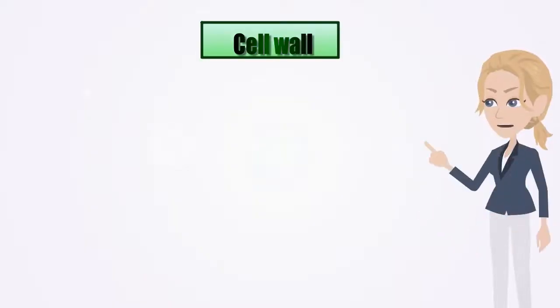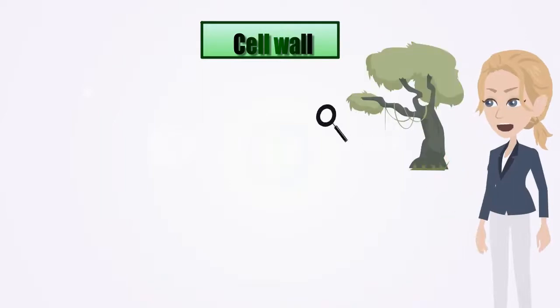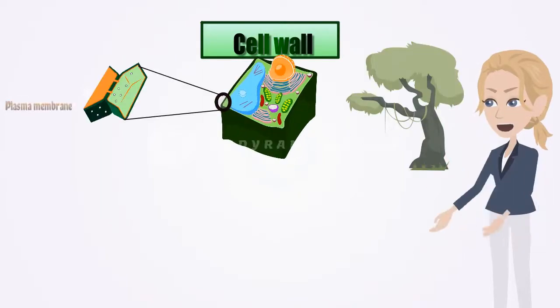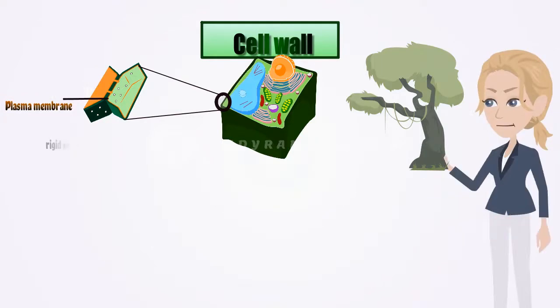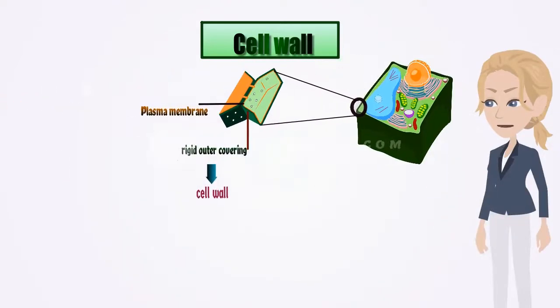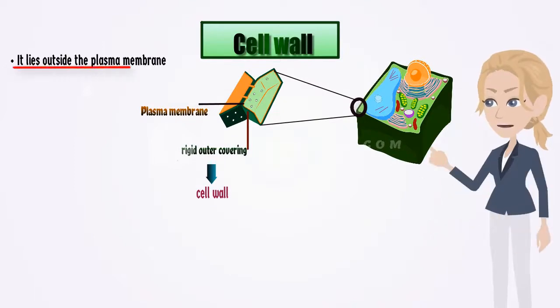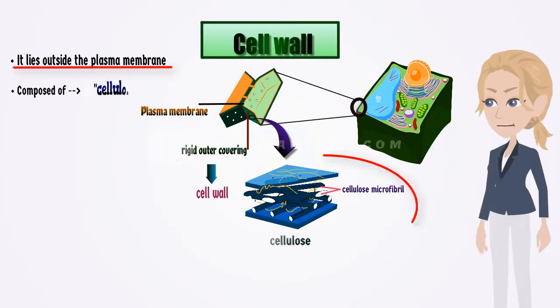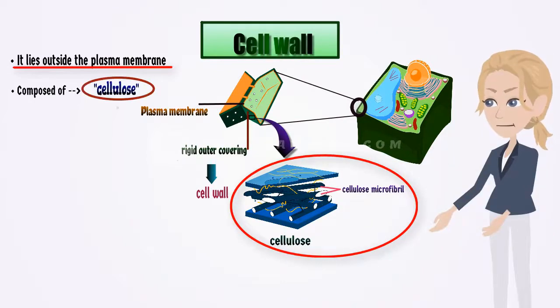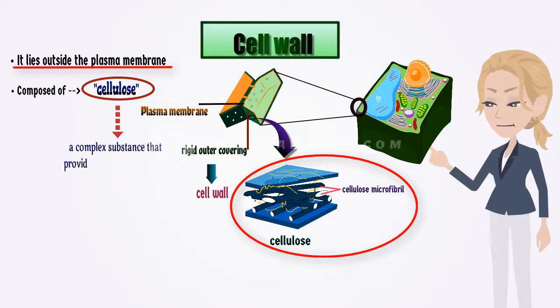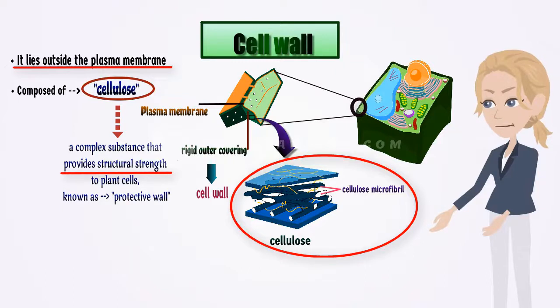So, let's start with cell wall. Plant cells, in addition to the plasma membrane, have another rigid outer covering called cell wall. The cell wall lies outside the plasma membrane. The plant cell wall is mainly composed of cellulose. Cellulose is a complex substance that provides structural strength to plant cells, so known as protective wall.